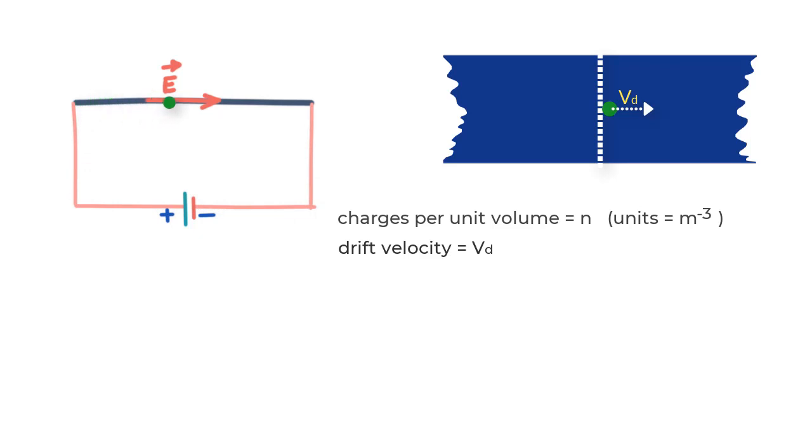In a way, in time dt, this volume containing charges has moved past this section. Then volume of such a cylinder is distance Vd dt into the cross sectional area A, that equals A Vd dt. And if N is the number of charges per unit volume,